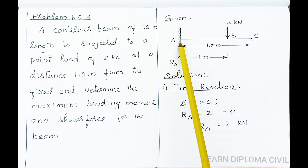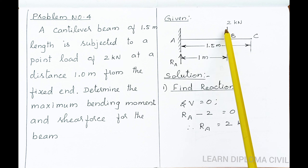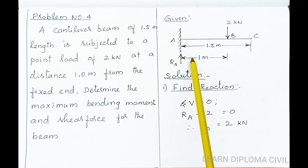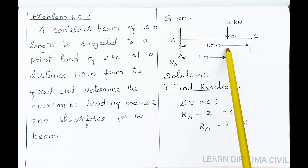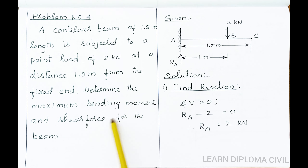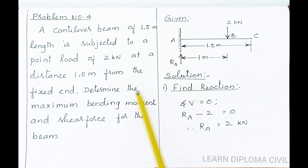The fixed end distance is 1 meter with a 2 kN load. Mark the point load at 1 meter length. Determine the maximum bending moment and shear force for the beam — calculate the maximum bending moment and shear force values.